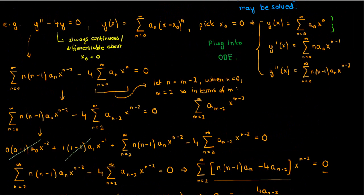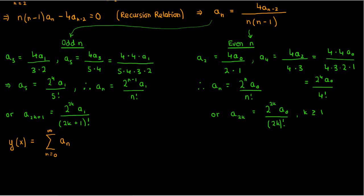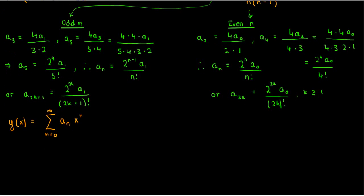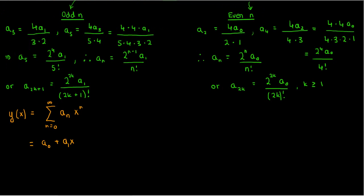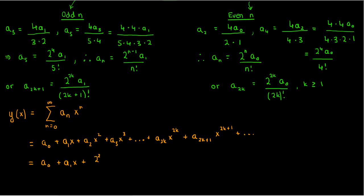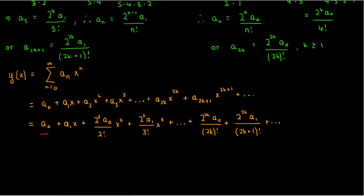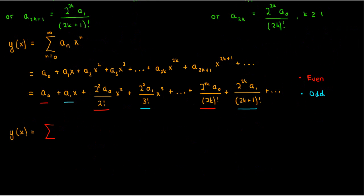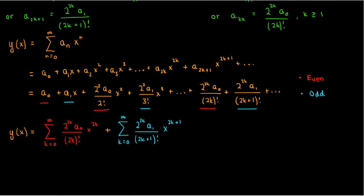Now going back to the solution y equals the sum from n equals 0 to infinity of a_n·x^n, and substituting in all the coefficient formulas, we can expand y as a₀ + a₁x + a₂x² + … + a_(2k)·x^(2k) + a_(2k+1)·x^(2k+1) + … . Substituting in the values for the higher coefficients gives a more explicit expression for y(x). We can separate the even terms from the odd terms to get two series. The solution becomes the sum from k equals 0 to infinity of [2^(2k)·a₀/(2k)!]·x^(2k) plus the sum from k equals 0 to infinity of [2^(2k)·a₁/(2k+1)!]·x^(2k+1). We can stop here for most cases, but in this situation we can go a step further.